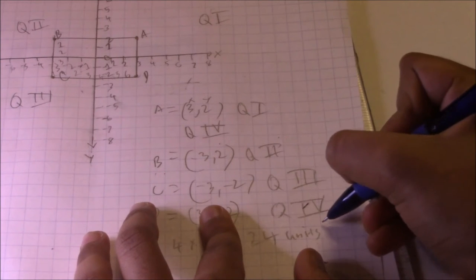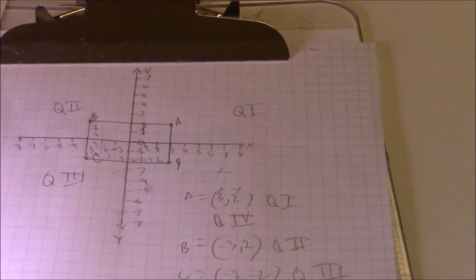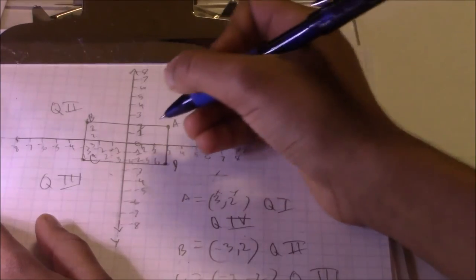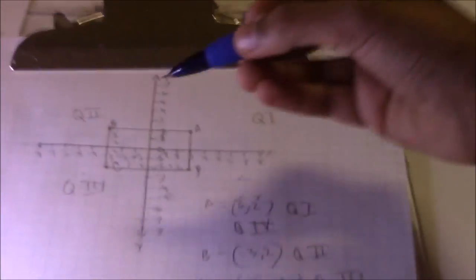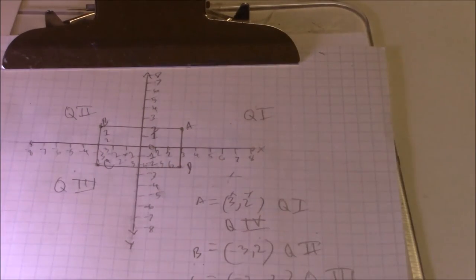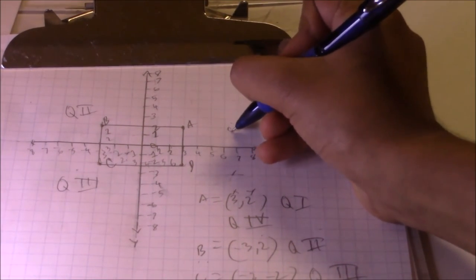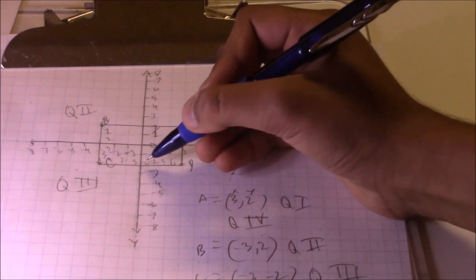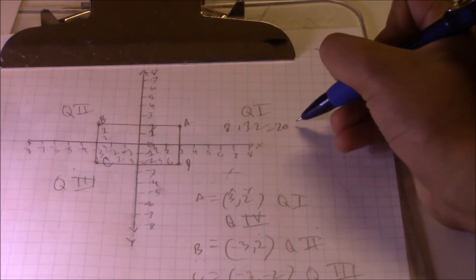The perimeter is easy. This side is 4, this side is 4. In a rectangle, opposite sides are parallel and symmetrical, so the two shorter sides are each 4 and the two longer sides are each 6. So the perimeter is 8 plus 12, which equals 20 units.